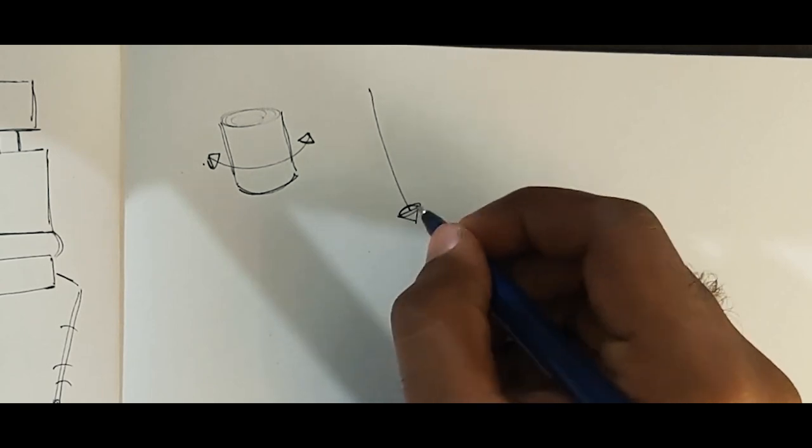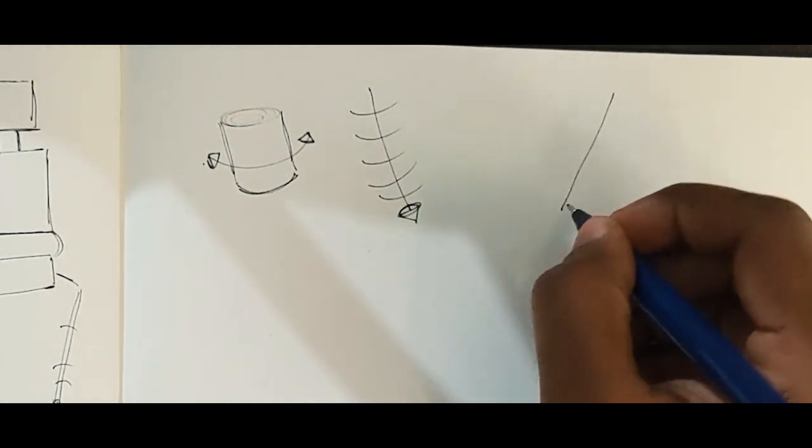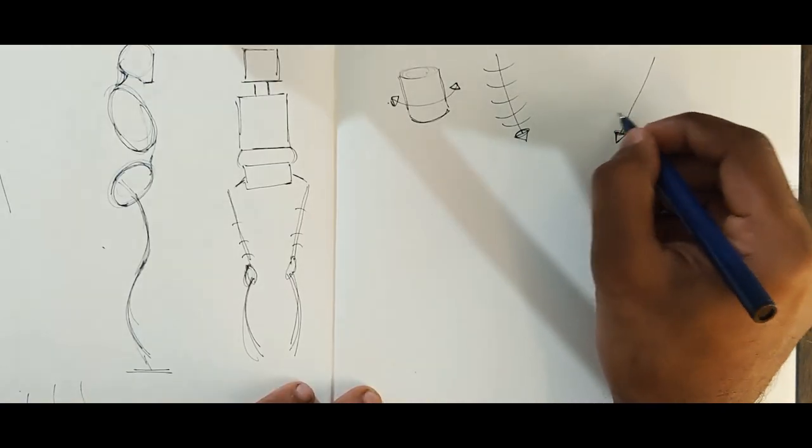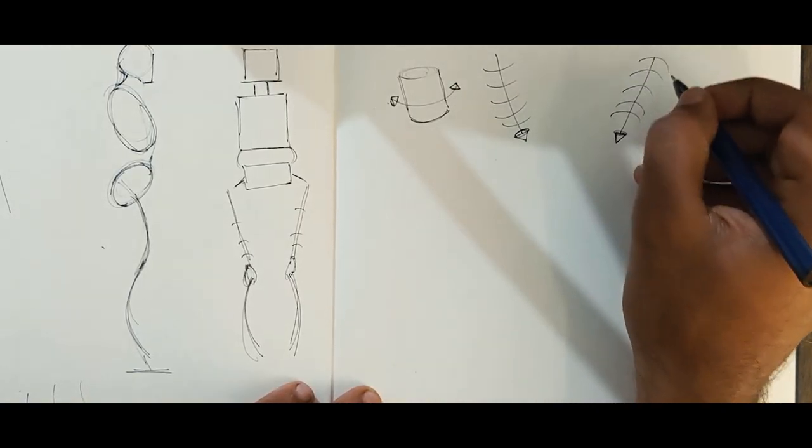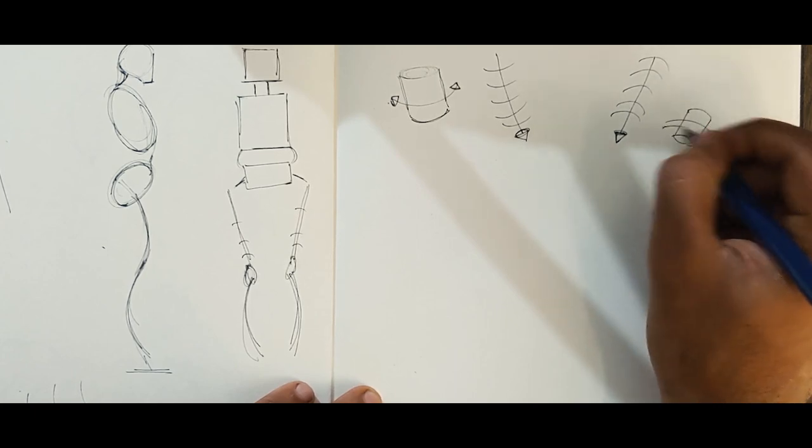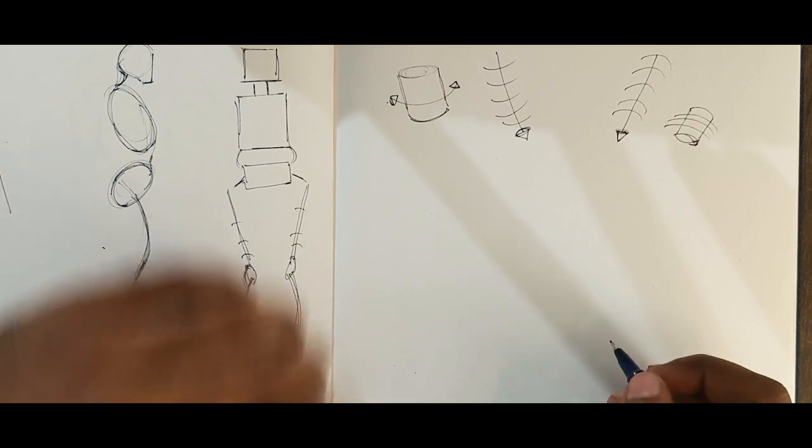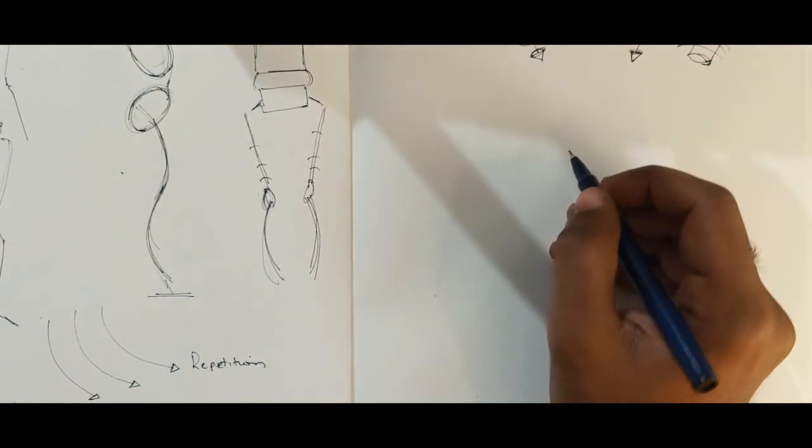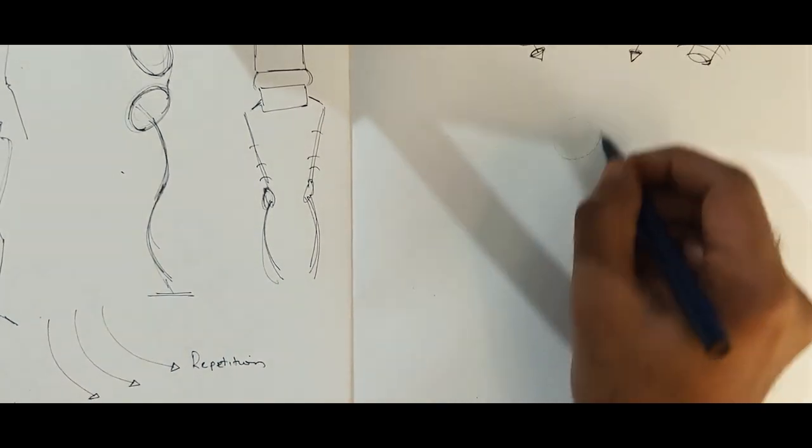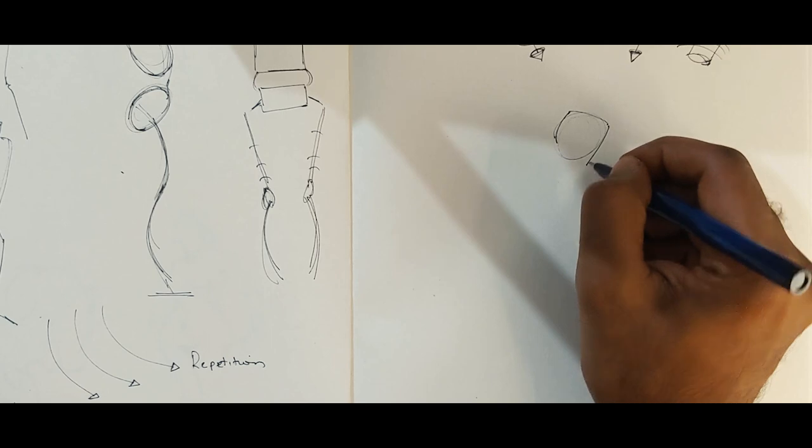Once you understand the lines that convey the gesture, you can move on to the form. When I draw this basic cylindrical shape here, I indicate it in space by these wrapping lines which show that the cylinder is tilting in a certain perspective. Without actually drawing the cylinder and just drawing the wrapping lines, you understand how it's placed in space. That's why wrapping lines are quite important to do on a figure.